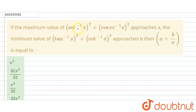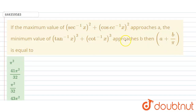Hello students. Today's question: if the maximum value of (sec⁻¹x)² + (csc⁻¹x)² equals a, and it approaches the minimum value of (tan⁻¹x)³ + (cot⁻¹x)³ equals b, then find the value of (a + b)/π. We need to find a, find b, then substitute into this expression.